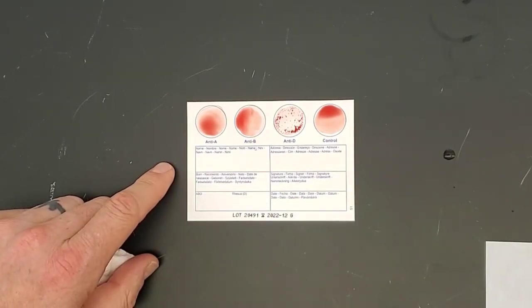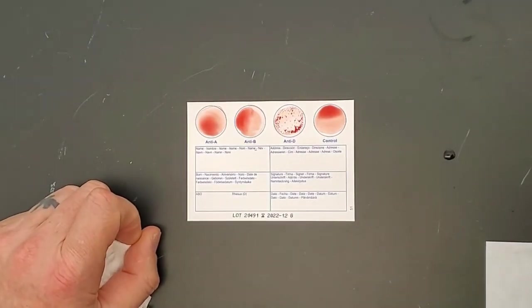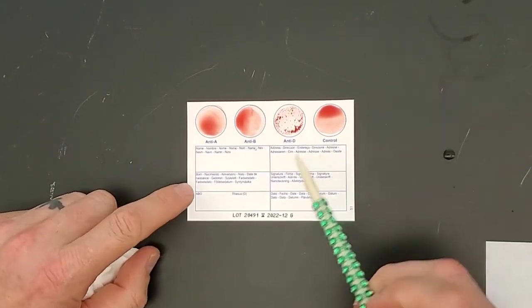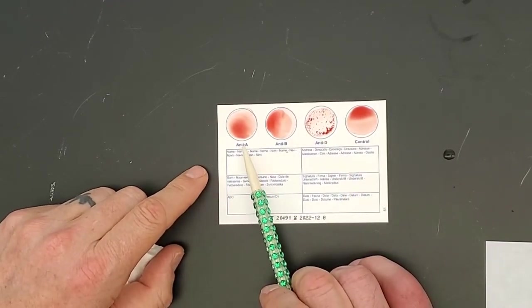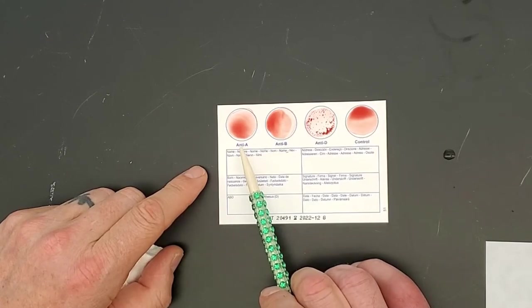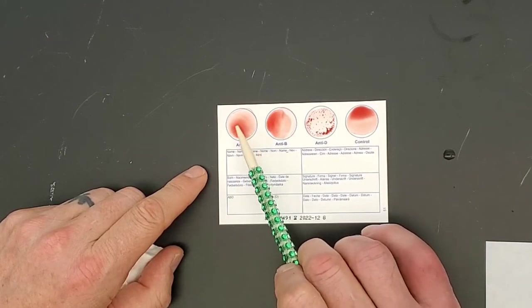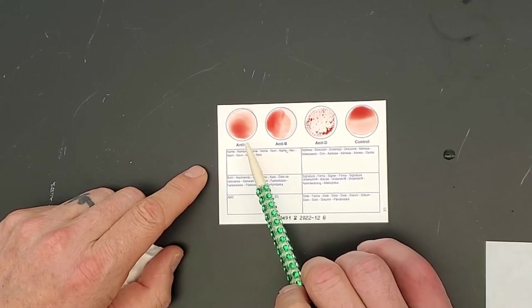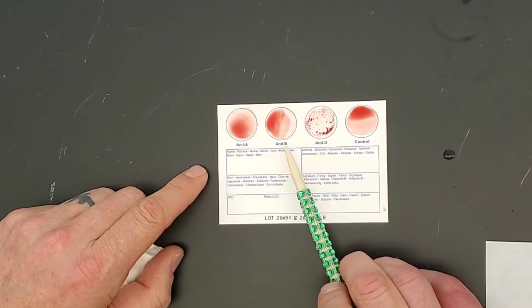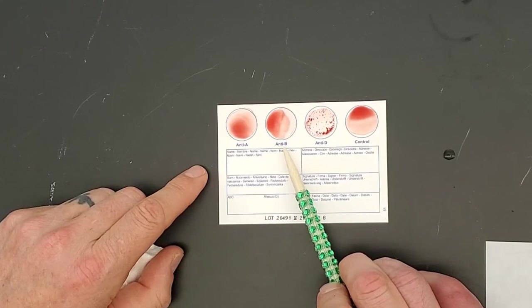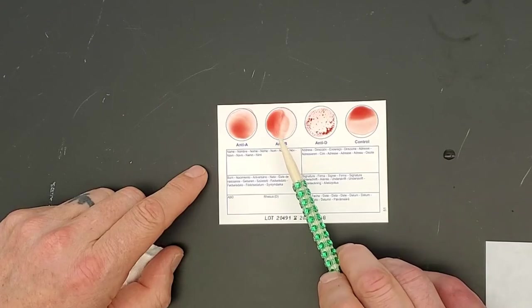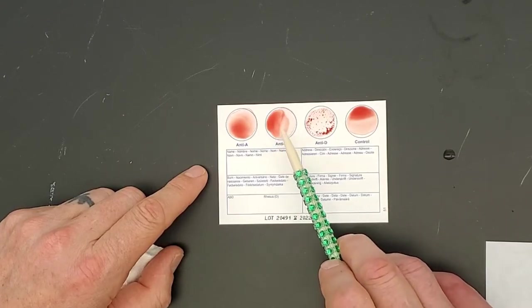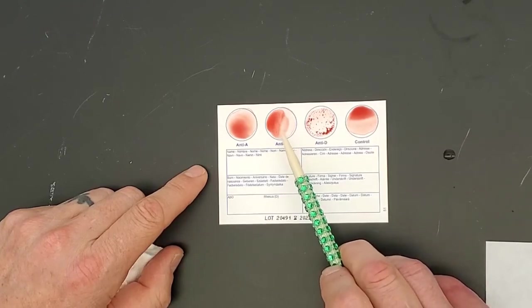Let me grab a pointer. This is one of my shiny ones. In the anti-A circle, where, if you recall, there were antibodies against A antigens, we don't see any kind of reaction happening here. What that means for my particular red blood cells is that there are no A antigens present on my red blood cells. In the anti-B circle, again, we see no reaction. The anti-B circle contained antibodies against B antigens. If there were B antigens on my red blood cells, then we would have seen the clumping that is agglutination here, and we don't see that. So there's no B on my red blood cells.